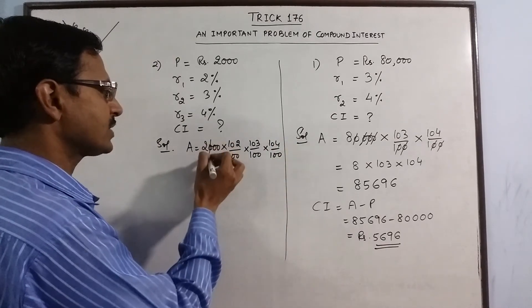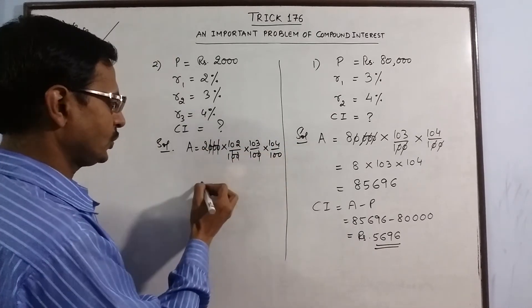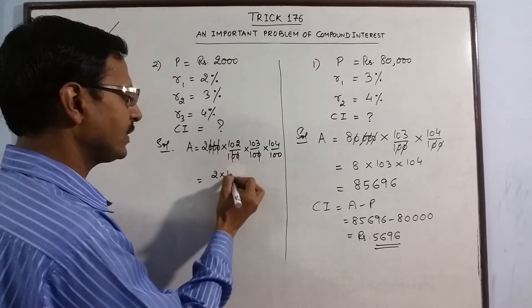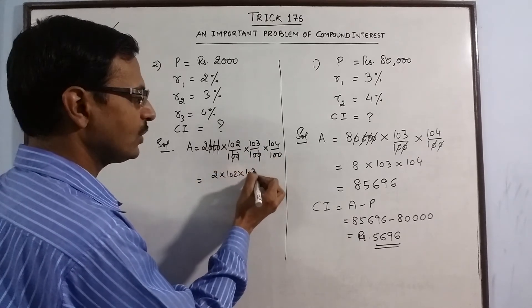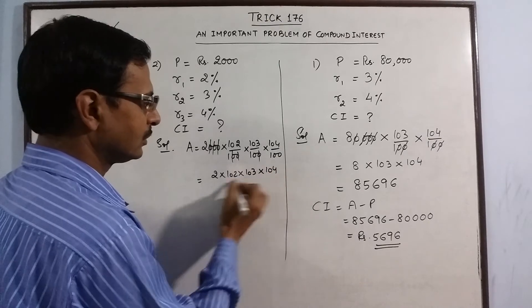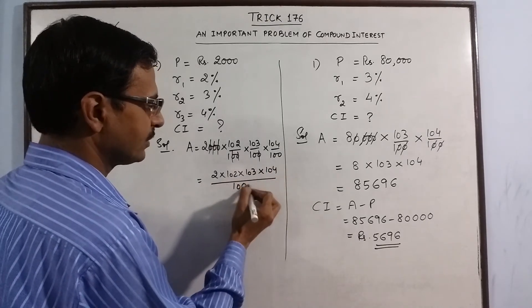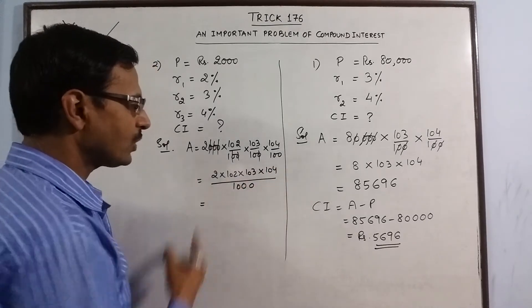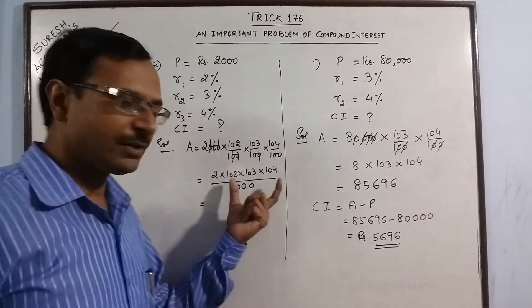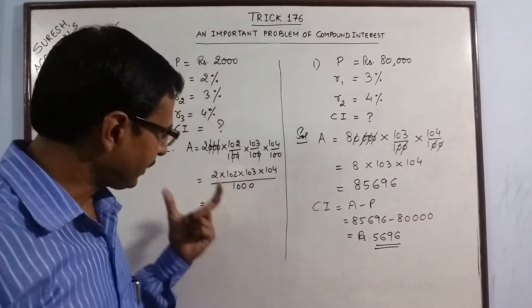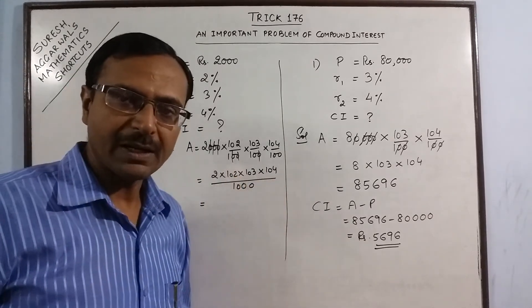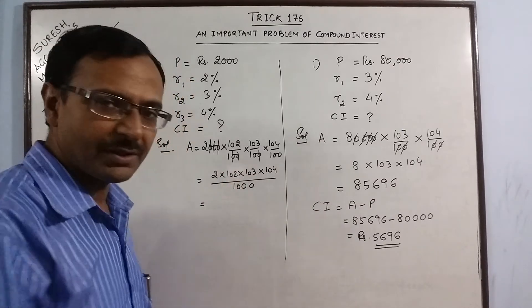So 3 zeros cancel out. So you have in the numerator 2 into 102 into 103 into 104 upon 1000. Here also you can multiply using the magic method. You can verify the trick which I have given for multiplying numbers close to the base quantities using magic method.